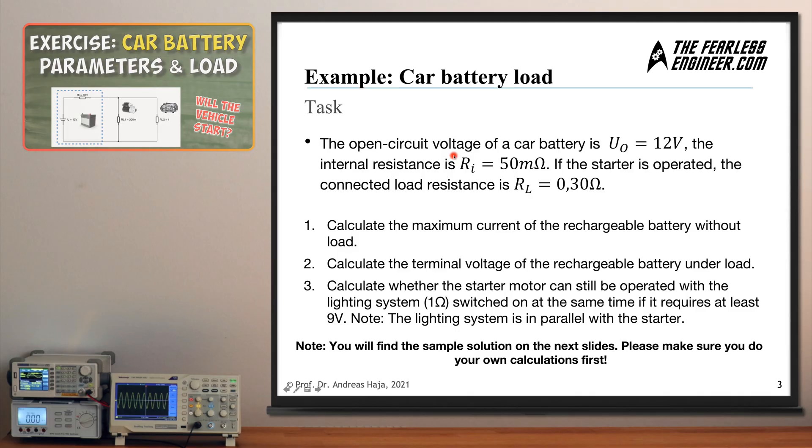Let's take a look at the task which you need to solve in this exercise. The open circuit voltage of a car battery is given with 12 volts. Then we have an internal resistance of this car battery, we have talked about parameters which describe batteries in previous videos. So the internal resistance for this car battery is at 50 milliohms and if the starter of the vehicle is operated then the connected load resistance is at resistance RL, L for load, 0.3 ohms.